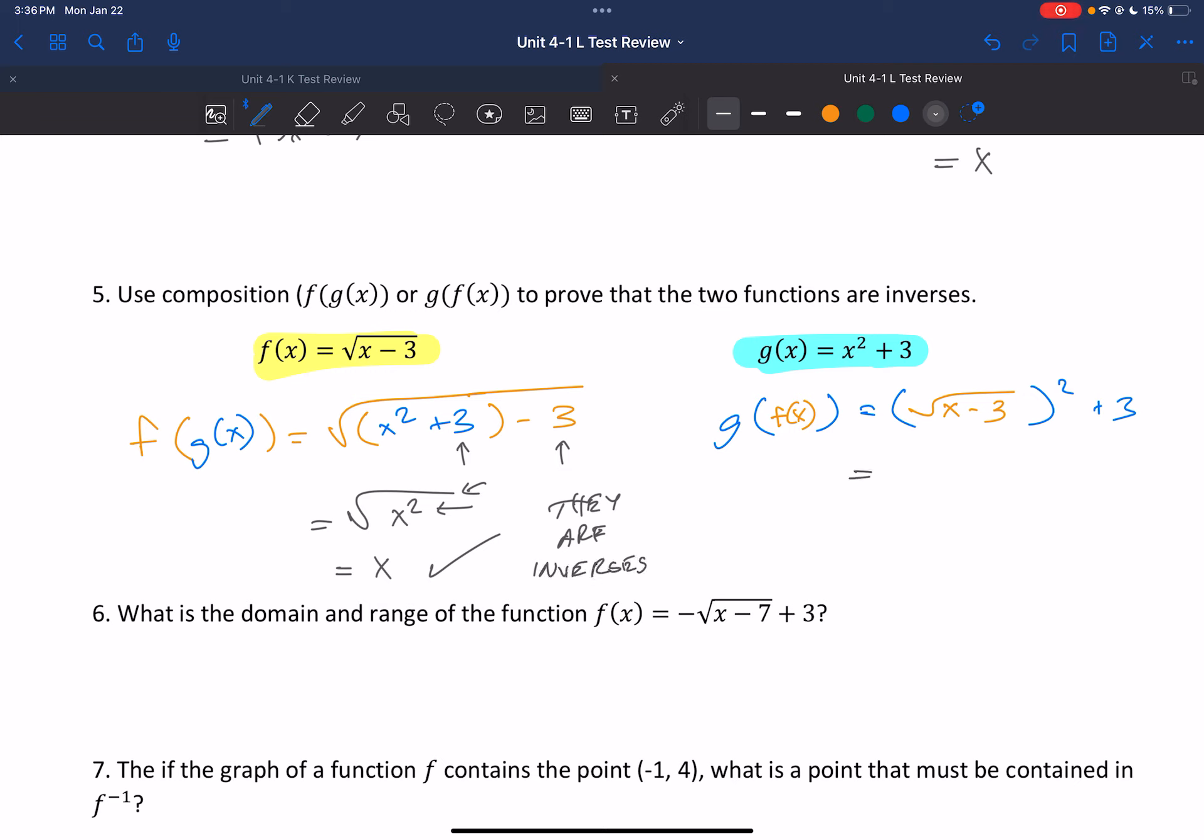If you had done it the other way around, the squared and the square root would go away first. Then plus 3 minus 3 would cancel. You just get x. It doesn't matter which way you do it. Both ways gives you the same answer.